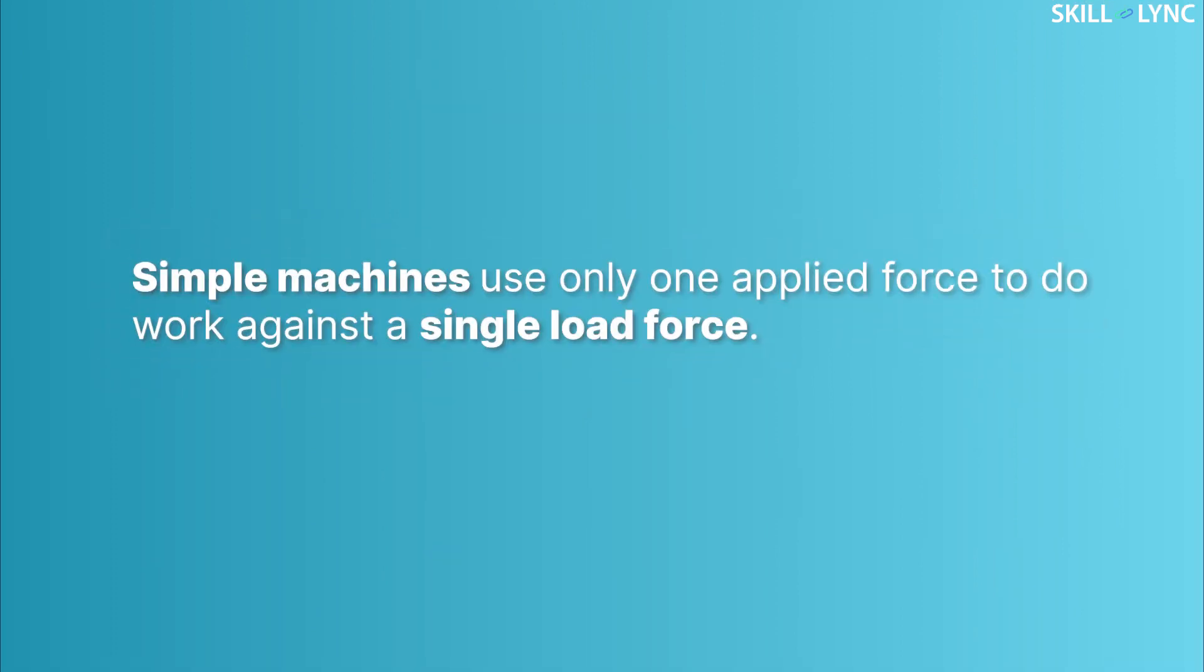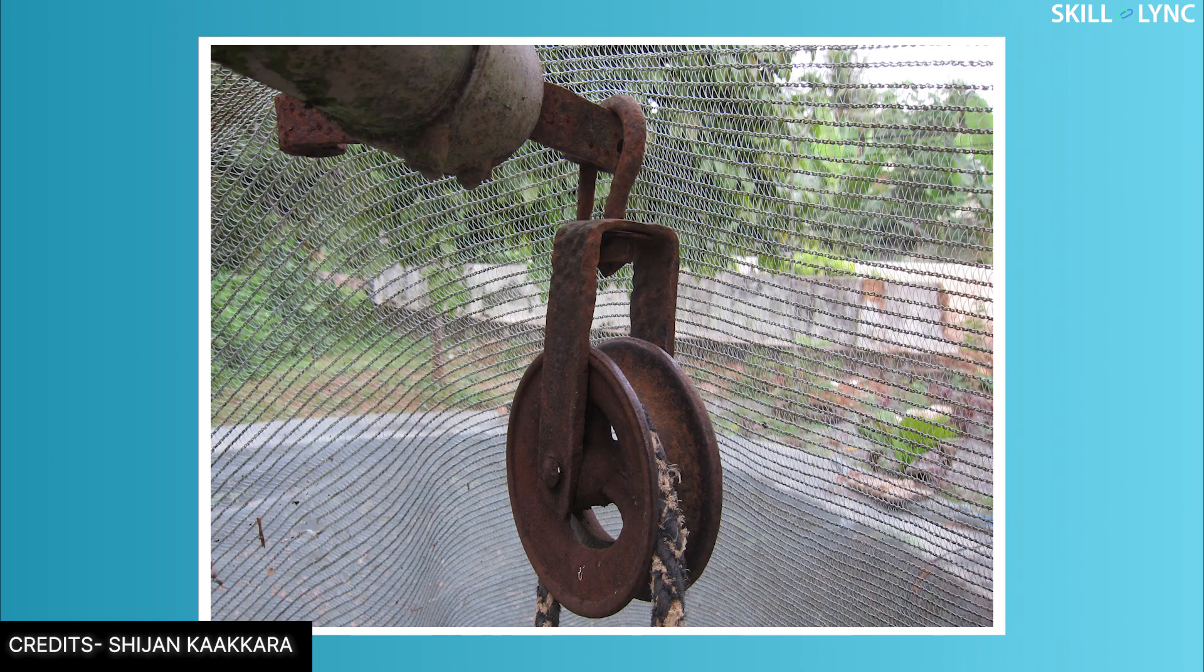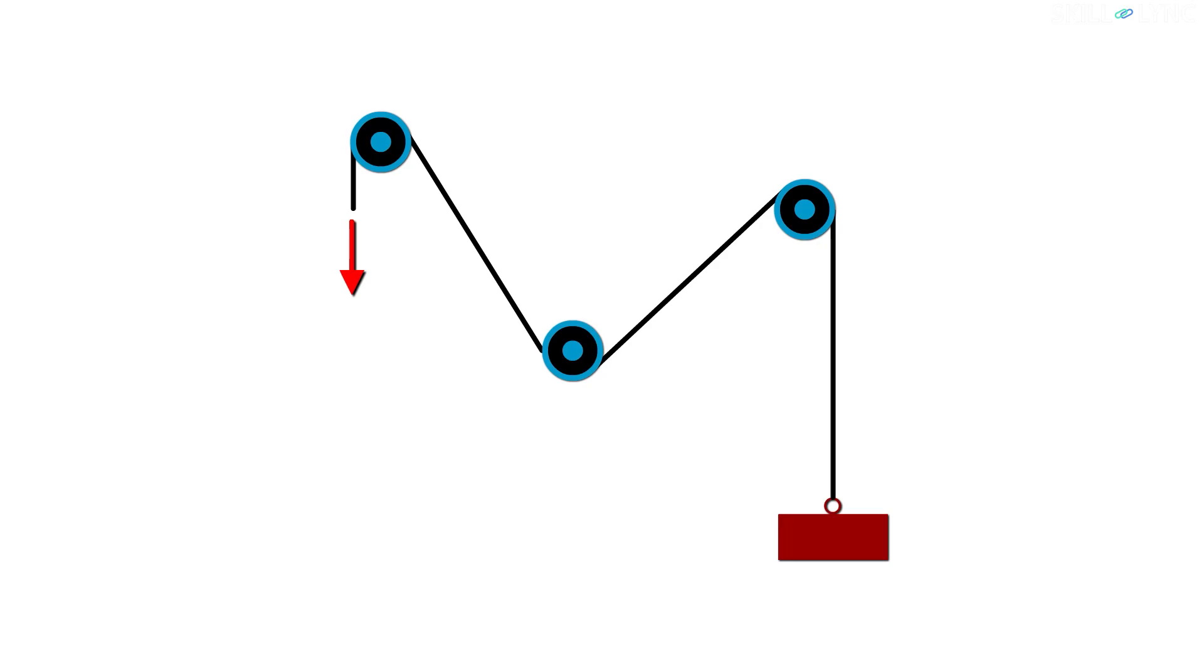Simple machines use only one applied force to do work against a single load force. Let me explain this by taking a pulley. On one side, you apply a downward force. On the other side, the object moves up. If you slowly release the pulley, the object will move down. One force, one load.